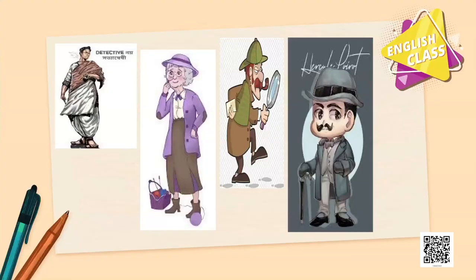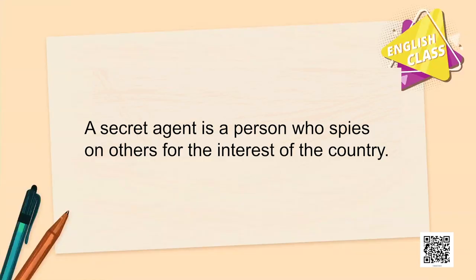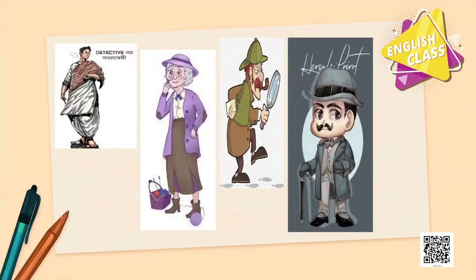Let me show you a couple of pictures, and you are expected to identify who these people might be. Yes — these are Byomkesh Bakshi, Miss Marple, Sherlock Holmes, Hercule Poirot. Can you find something common among all of these? They are all detectives, all secret agents. A secret agent is somebody who spies on others for the interest of their own country. You can identify more — like James Bond or Karamchand. Raise your hands and pat yourself on the back — you have done well.